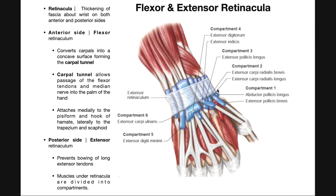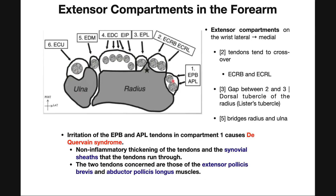The extensor retinaculum really does two things. It prevents bowing of those long extensor tendons — if you were to extend your wrist and there were no retinaculum, the tendons would come off the wrist and bow outward. This tightly wraps around them so that when you extend your wrist, they remain close to the actual bones. The other thing it does is divide the tendons into compartments, which we'll talk about in the following video.